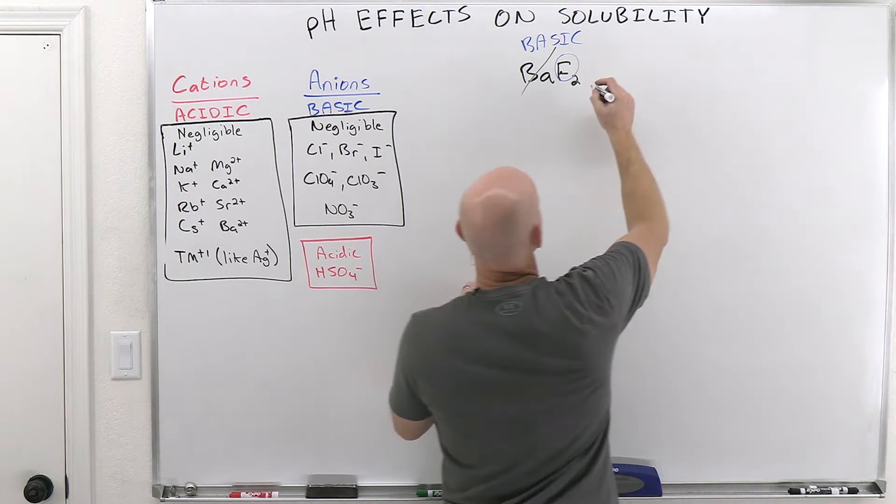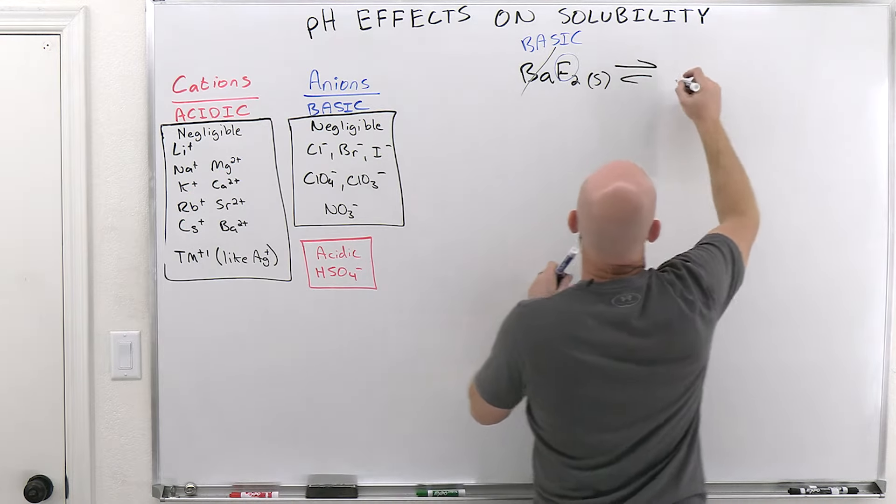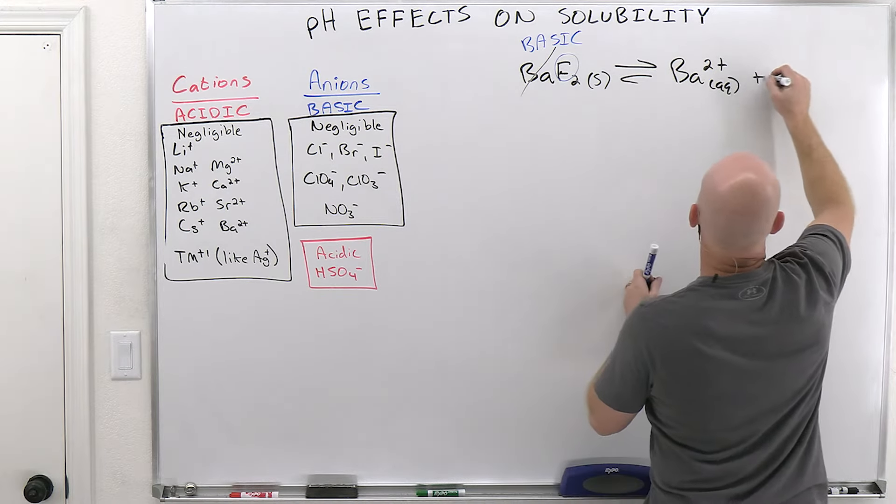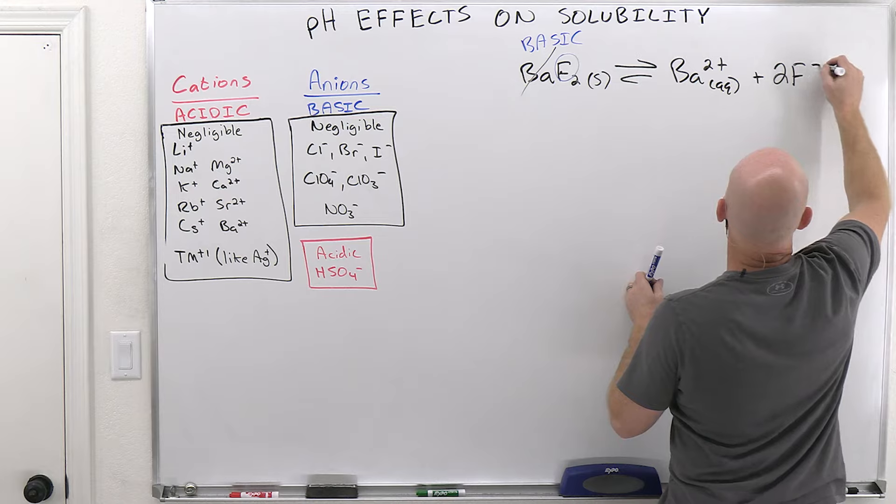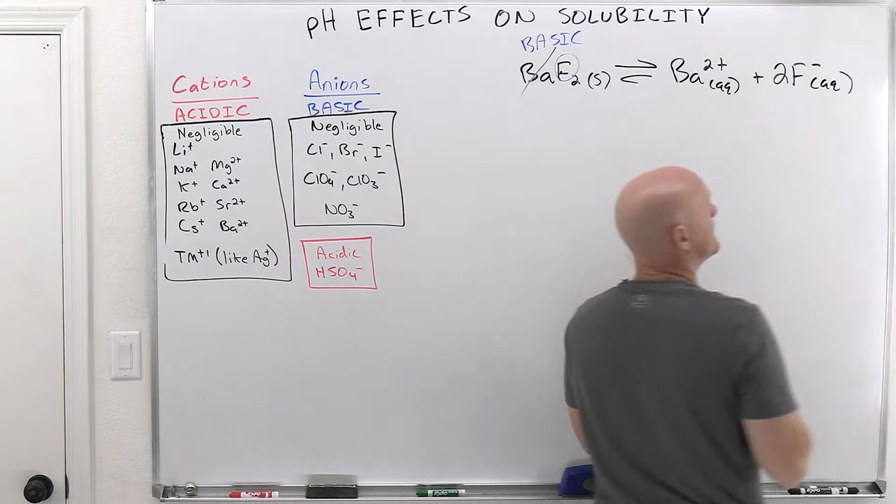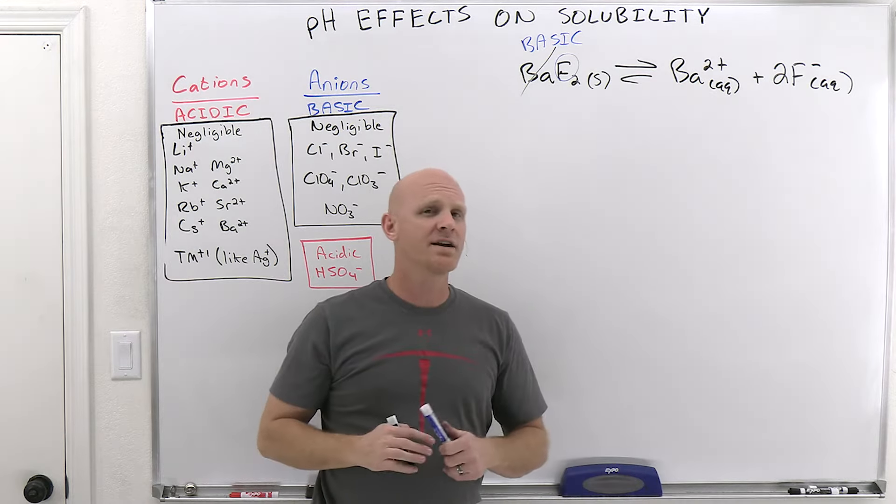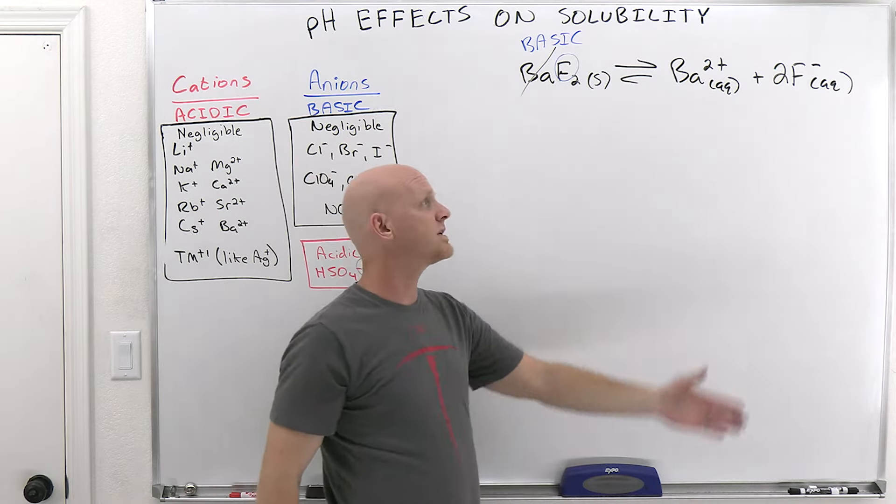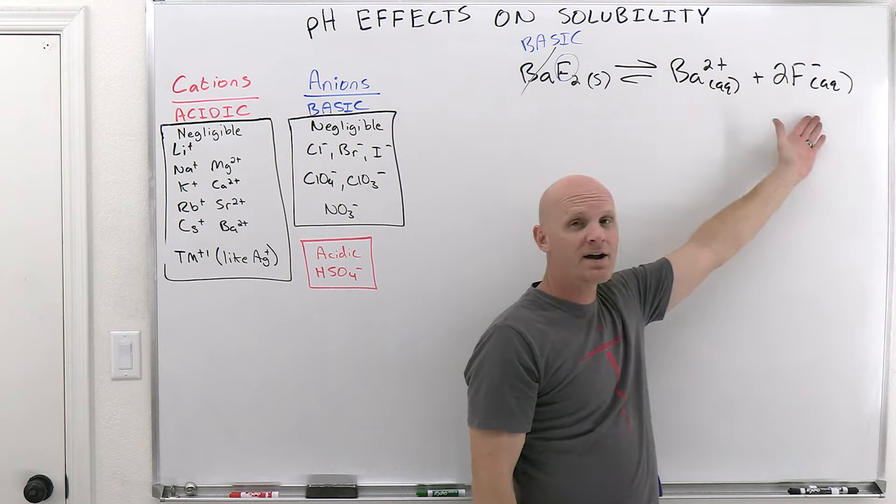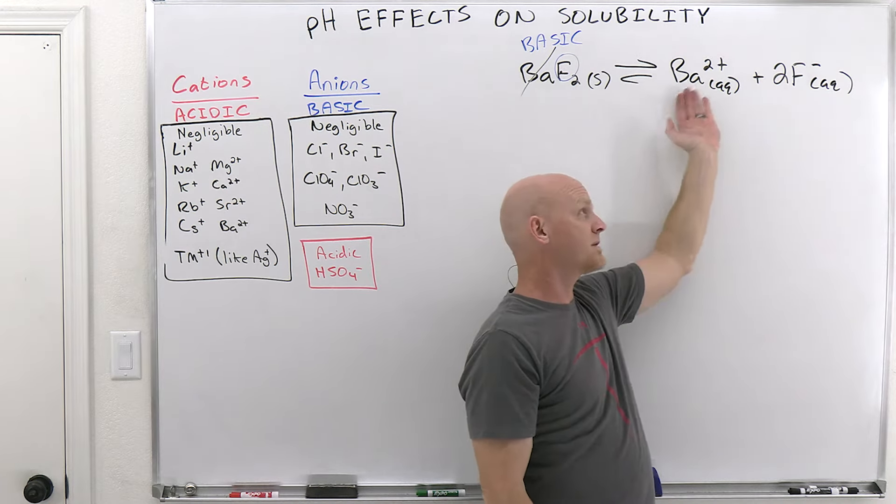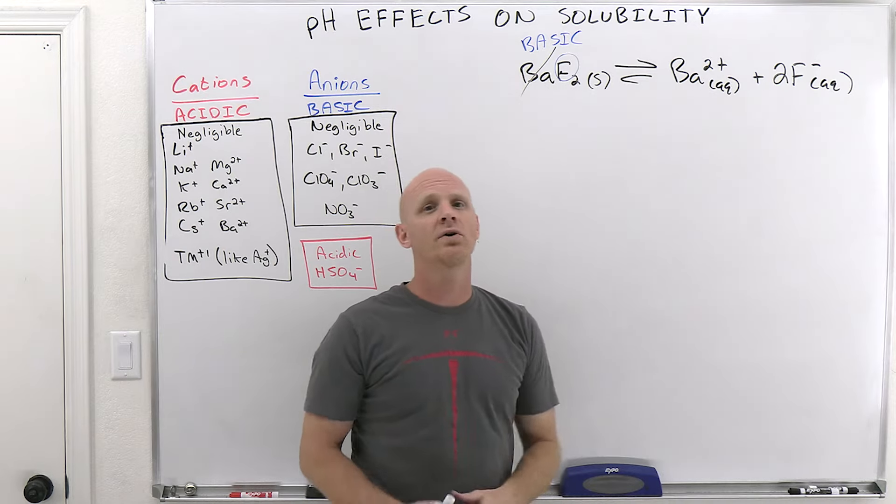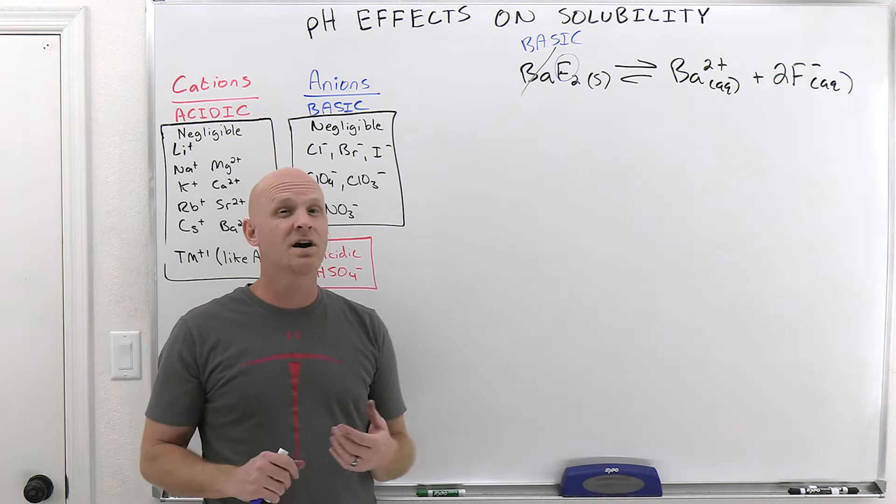So if we take a look at the Ksp reaction for barium fluoride, there it is. And we've dealt with the common ion effect already. If I wanted to reduce the solubility of barium fluoride, I could add any strong electrolyte that either contains barium ions or fluoride ions. Adding it in would shift this equilibrium back to the left, meaning less dissolved solid and lower solubility. So that was the common ion effect.